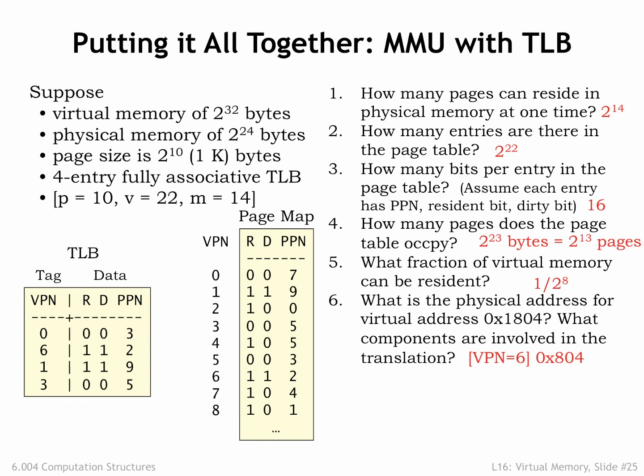It's a pain to do all the bit manipulations when P is not a multiple of 4. How about virtual address 0x1080? For this address the VPN is 4 and the offset is 80. The translation for VPN 4 is not cached in the TLB, so we have to check the page map, which tells us that the page is resident in physical page 5. Concatenating the PPN and offset, we get 0x1480 as the physical address.